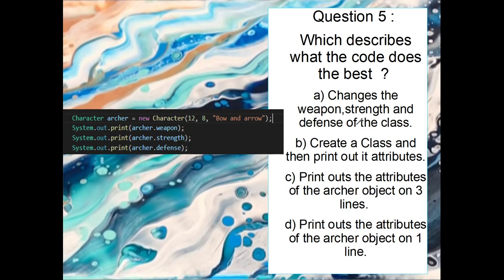Okay, so the next one, which one describes what the code does best? So changes the weapons, strength and defense of the class. We haven't actually changed anything else. We're just printing things out here. So it's not going to be that. Create a class and then print out its attributes. So it could be that because we create something, although we're not creating a class, we're creating an object. So that might be wrong. Prints out the attributes of the archer object on three lines. So that looks like it could be it. So we can get rid of B because it's a class. Although saying this, it's going to be on three lines and print, what print does is it prints it on the same line. So prints the attributes of the archer object on one line. So that was quite a tricky one. There was a lot of possibilities, but because print, it prints out on one line, even if you have three lines of code. So the answer is D.